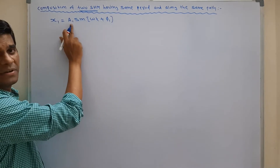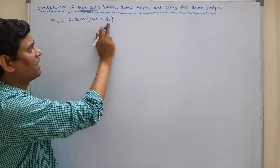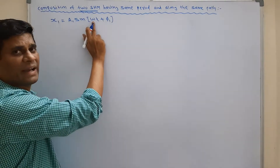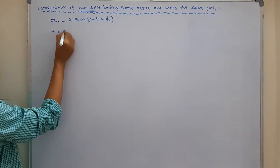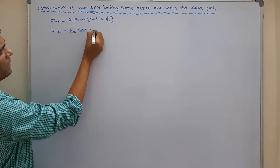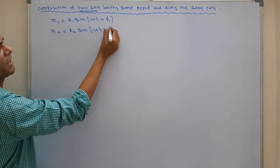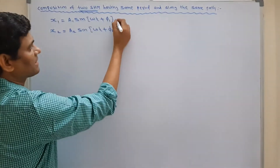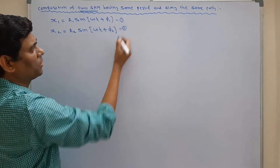The amplitude is A1, initial phase angle phi 1, and since the period is the same, omega is the same. The second equation: X2 equals A2 sine omega t plus phi 2. This is equation 1 and this is equation 2.